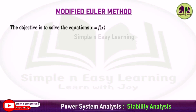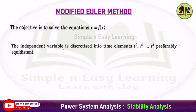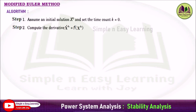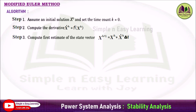The main objective is to solve the equation x dot equal to f of x. The independent variable is discretized into time elements t-naught, t1, t2, up to t-k, preferably at equidistant intervals. Algorithm step 1: assume an initial solution x-naught and set the time count k equal to 0. Step 2: compute the first derivative x-dot of k, that is a function of x of k.